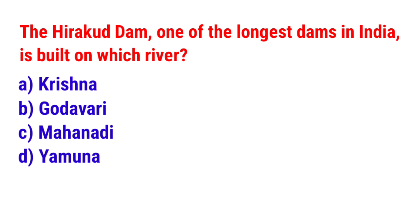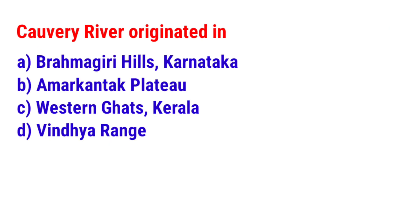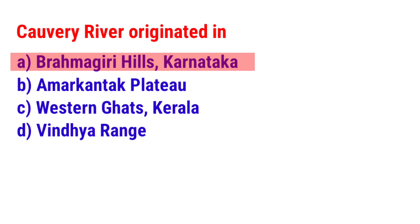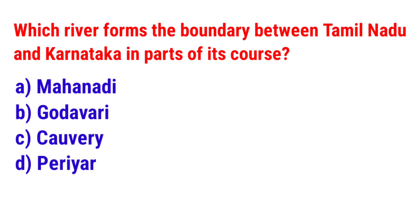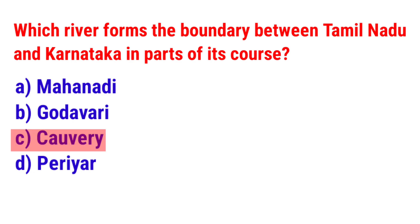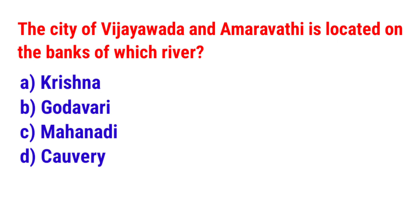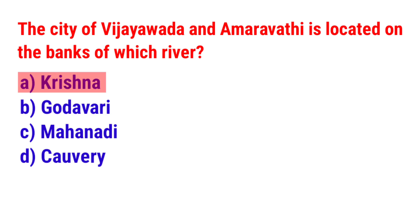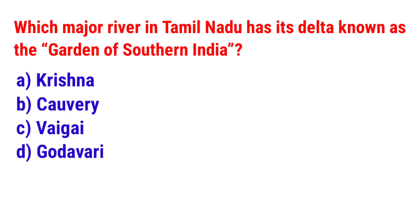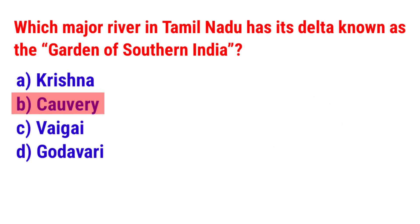Question 54: The Hirakud Dam, one of the longest dams in India, is built on which river? The answer is option C — Mahanadi. Question 55: Kaveri River originates in? The answer is option A — Brahmagiri Hills in Karnataka. Question 56: Which river forms the boundary between Tamil Nadu and Karnataka in parts of its course? The answer is option C — Kaveri. Question 57: The city of Vijayawada and Amaravati is located on the banks of which river? The answer is option A — Krishna. Question 58: Which major river in Tamil Nadu has its delta known as the Garden of Southern India? The answer is option B — Kaveri.